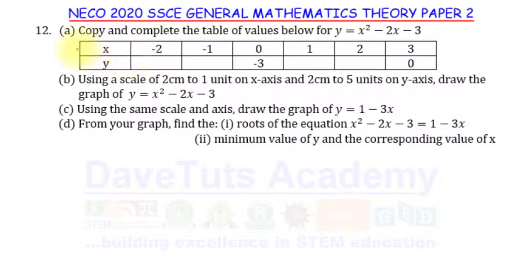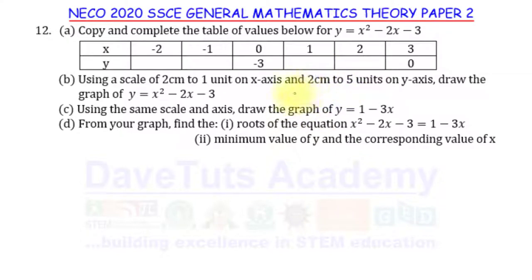What I would like to do first is complete the table of values for y = x² - 2x - 3. Looking at question (c), we also need to draw the graph of y = 1 - 3x, so we need a table for that equation too. I'm going to show you manually how to do this. If you want a quicker way using your calculator, you can check our other videos on graphical solution to quadratic equations and trigonometric functions.